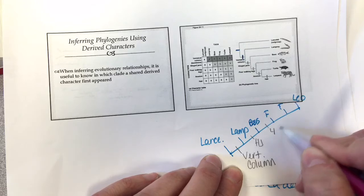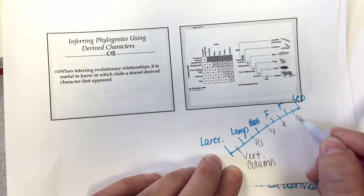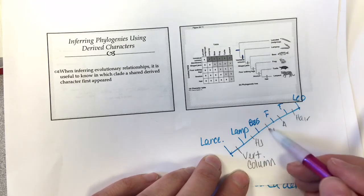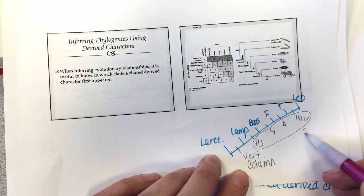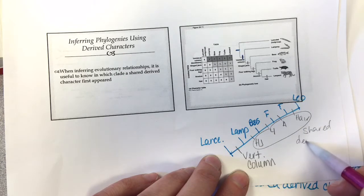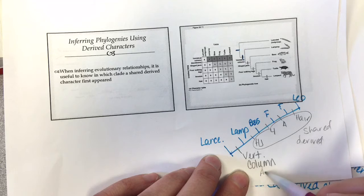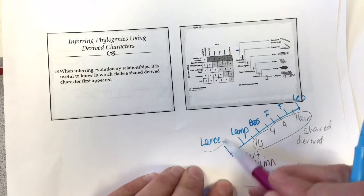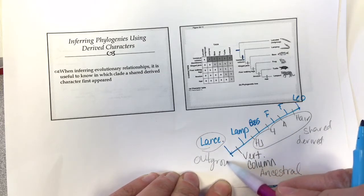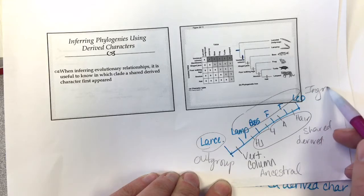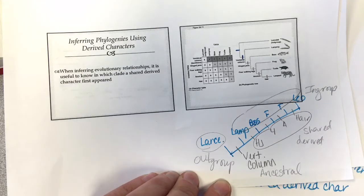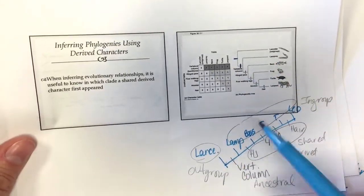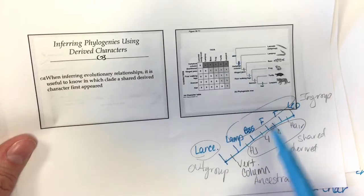The hair and amnion and other newer traits are shared derived characteristics, while the vertebral column in the out-group is the ancestral or primitive characteristic. The lancelet is the out-group and everything else is the in-group. Both the phylogenetic tree and the cladogram show the same information — you can interpret and get the same information from both.